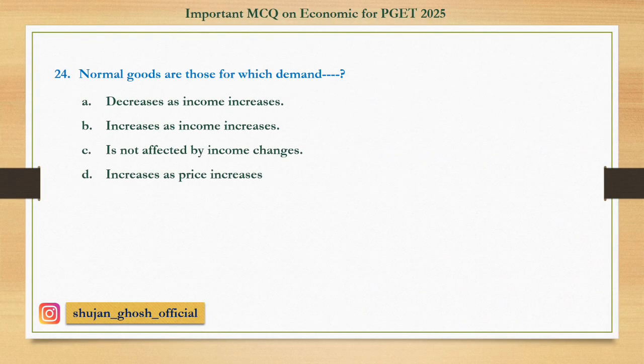Question number twenty-four: Normal goods are those for which demand — option A: decreases as income increases; B: increases as income increases; C: is not affected by income changes; D: increases as price increases. Answer: increases as income increases.